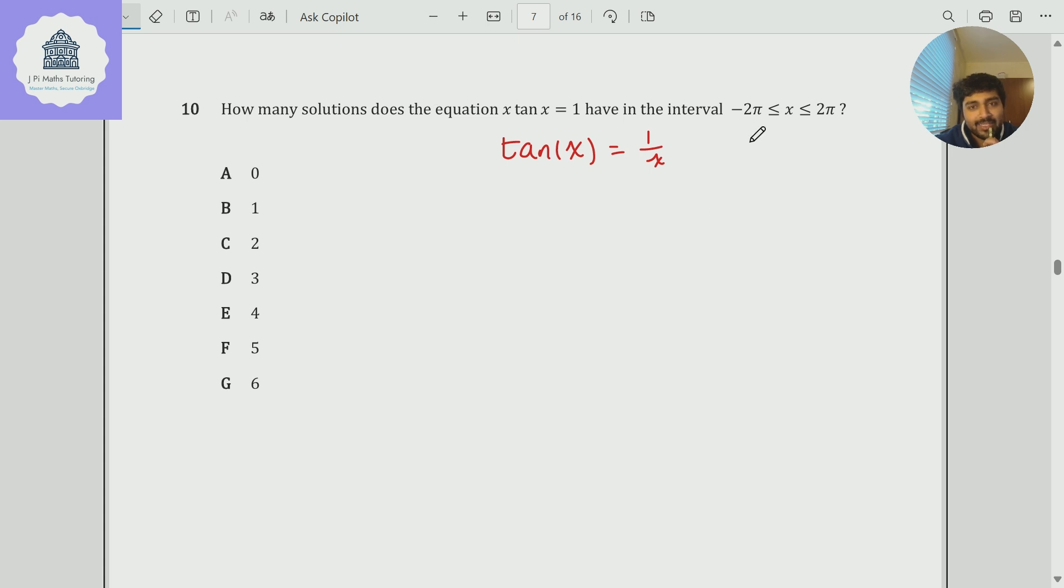But in fact, I can do one more thing here. This is a nice observation specifically for this problem. I noticed that tan x and 1 over x, they're both odd functions. And in particular, if I look at the original equation, x times tan x will be an even function.